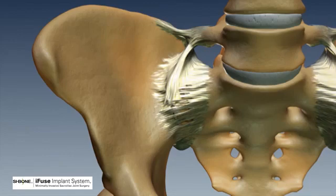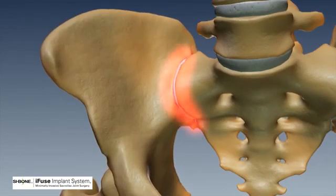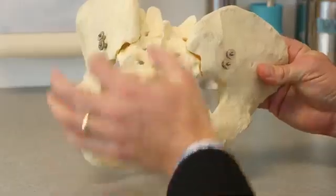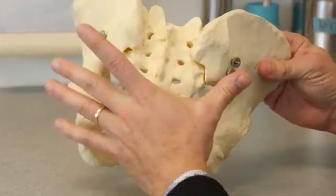One of the unique features of the SI joint is that it's a very difficult joint to unload, and so patients can have pain with standing or going upstairs, rising to a standing position from a seating position, or they can have pain with sitting or even with sleeping or rolling over in bed at night, because it's such a difficult joint to unload.